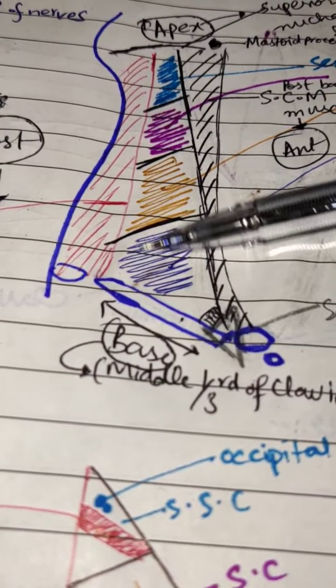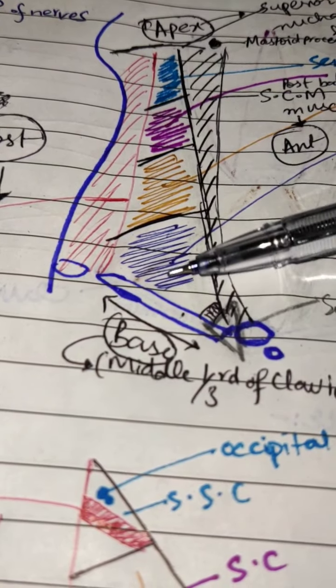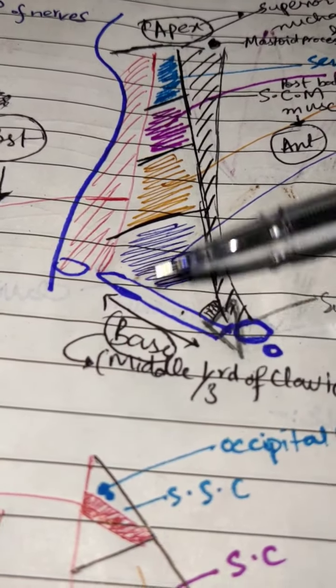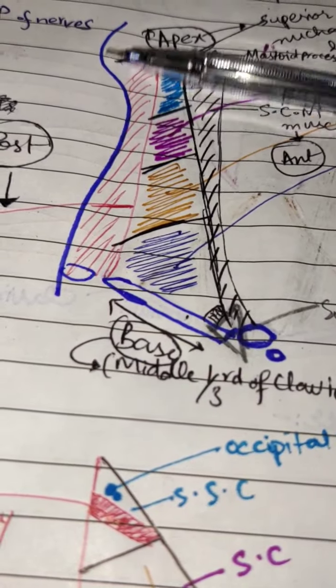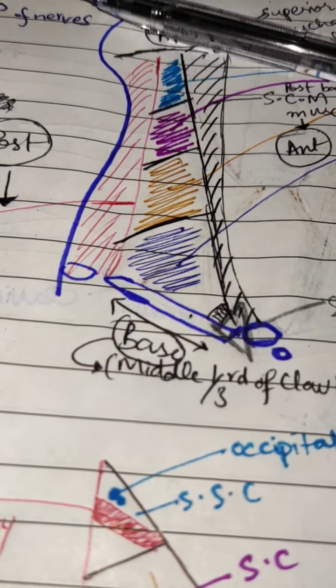The floor is formed by four muscles which are covered by the pre-vertebral layer of the deep cervical fascia. The pre-vertebral layer is on it.